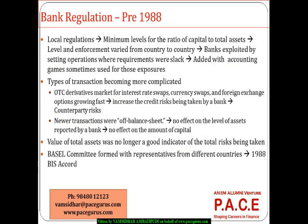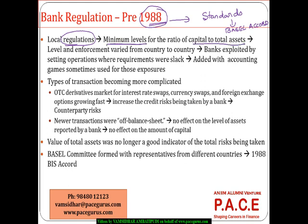Looking at regulations, 1988 marks the first time internationally a set of standards was established, called the Basel Accord or Basel 1. Before 1988, every country had its own regulations for capital requirements. They worked out at the local level what should be the minimum ratio of capital to total assets. The amounts and percentages differed from country to country, and the strictness of implementation also varied.